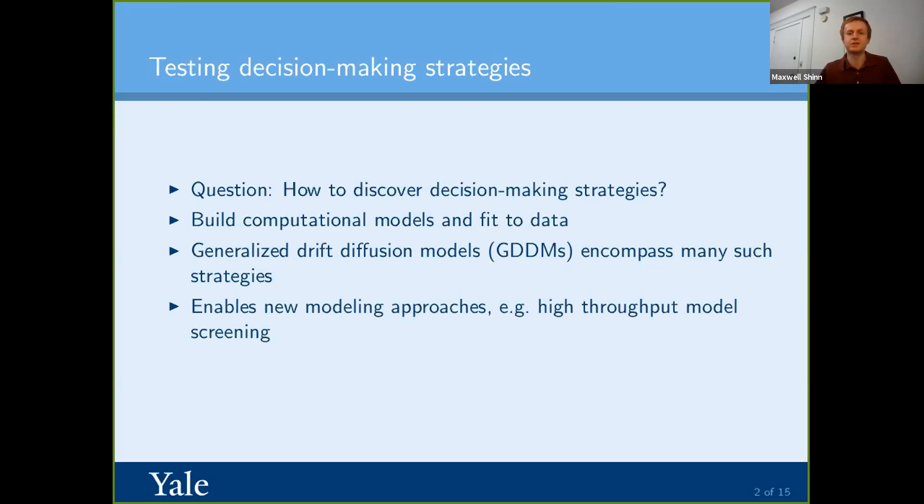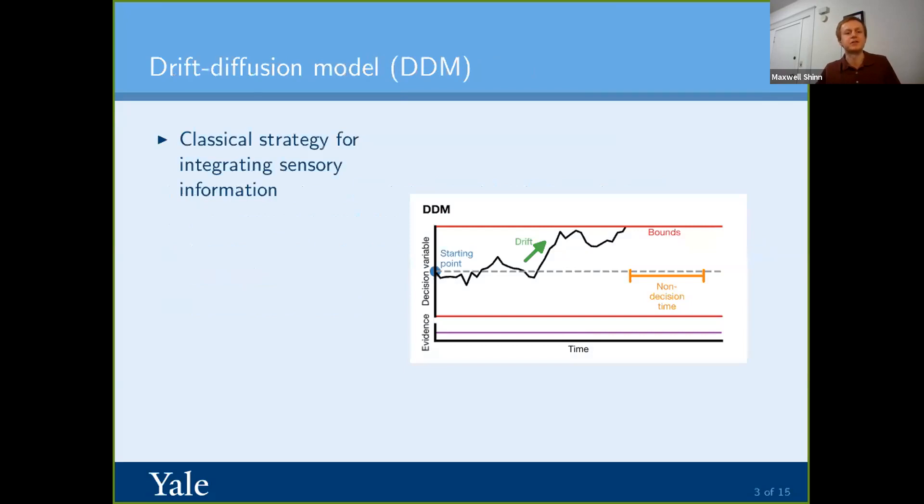So this is all based on one classic model, which is the drift diffusion model. This is what most people think of when they think of perceptual decision making type of models. And this represents the strategy of just integrating all the information you have. So the idea behind this model is just that you acquire noisy information over time and you integrate that information. You have two boundaries, one on the top and one on the bottom, representing two different options that you can choose. Your drift rate tells you the average direction of motion. Your starting point tells you where you start. And then this non-decision time is time that's not related to the decision that's added on to the end.